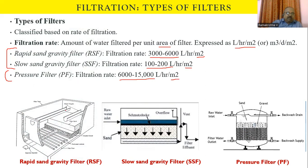Because a pressure filter can handle more water per unit area, its sizing is compact — it is a small cylindrical unit. A slow sand filter, handling very little water per unit area, occupies a relatively large area. The rapid sand gravity filter occupies a medium area between the pressure filter and the slow sand gravity filter.